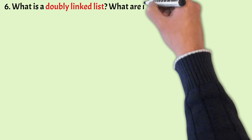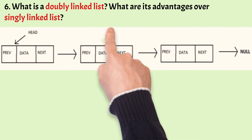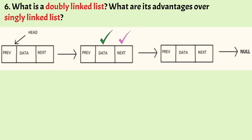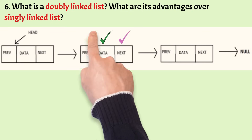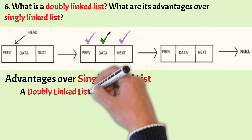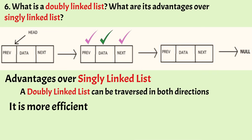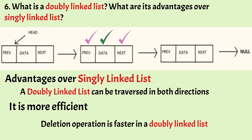What is a doubly linked list and what are its advantages over a singly linked list? A linked list contains a data field and a pointer to the next node. In a doubly linked list, there is an extra pointer on every node which points to the previous node. The advantages are: a doubly linked list can be traversed in both directions, making it more efficient. Deletion is also faster — in a singly linked list, you must traverse to find the previous node, whereas in a doubly linked list, there is no need to traverse since it has both previous and next pointers.